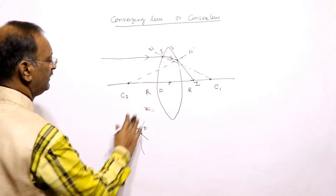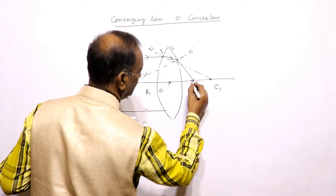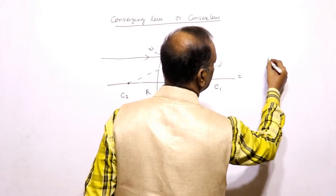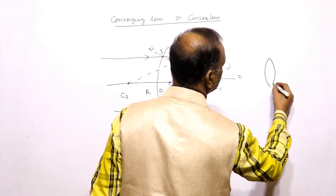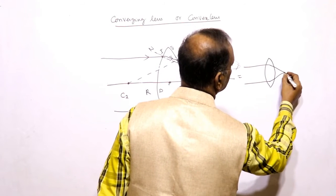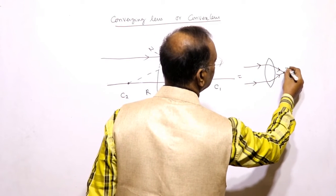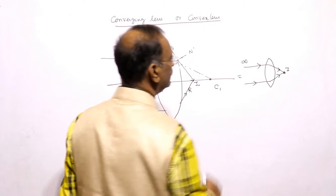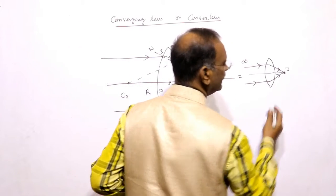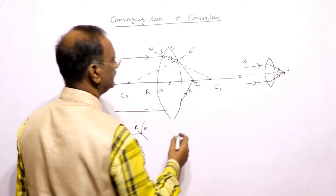Similarly, another ray coming parallel will also, after refraction through the lens, form the image at the same point. So in general, we can say a convex lens acts as a converging lens — the rays are converged. With the object at infinity, the image is formed at the focal point. That is why it is called a converging lens.